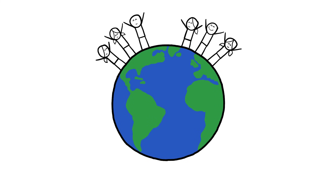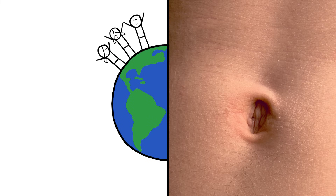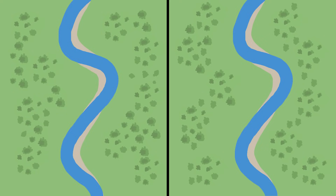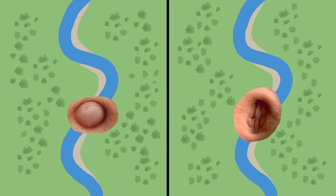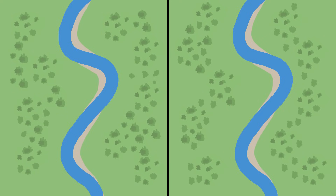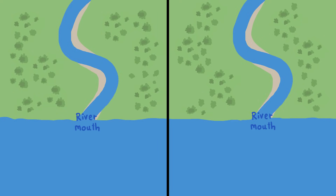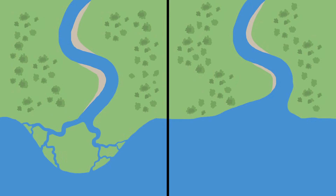The world is divided into two kinds of people, those with innie bellybuttons and those with outies. Rivers also have innies and outies, not bellybuttons but mouths. Where rivers flow into the sea, the land either pokes out or bends inward. But rivers don't have umbilical cords, so why do they have innies and outies?